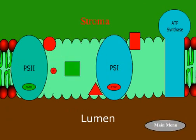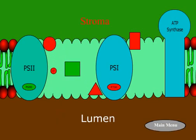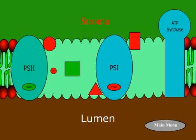Shown here are the electrons being passed along a series of electron carriers which connect Photosystem II and Photosystem I. Notice that as the electrons move, hydrogen plus ions are dragged into the lumen.